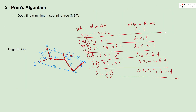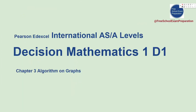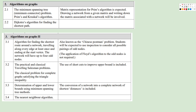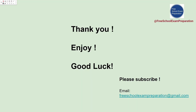Let's review the syllabus. We've talked about the minimum spanning tree using both Prim's and Kruskal's algorithms. Matrix representation for Prim's algorithm is expected, and we've covered that. Drawing a network from a given matrix and writing down the matrix associated with a network are also required — we've done all of this. That's everything for this lecture. We hope you have enjoyed it and wish you good luck with your exam. Please subscribe to our YouTube channel, Free School Exam Preparation. Thank you.